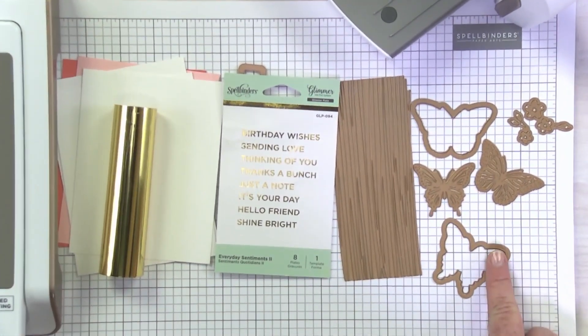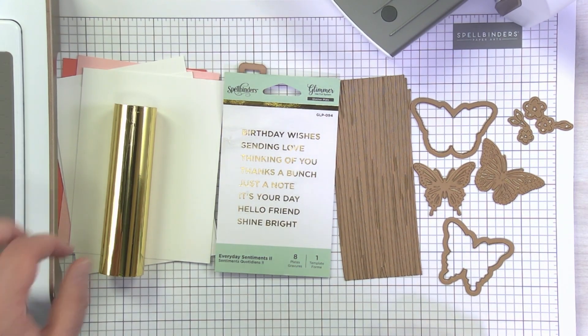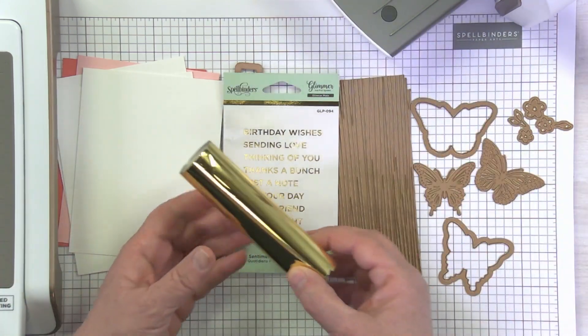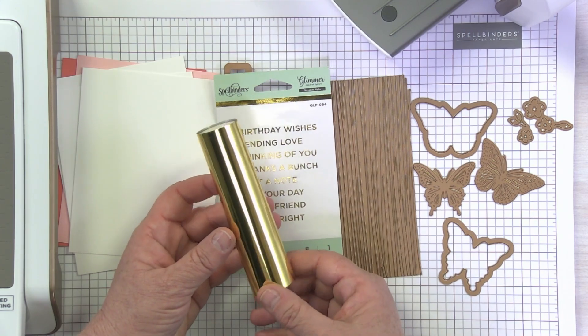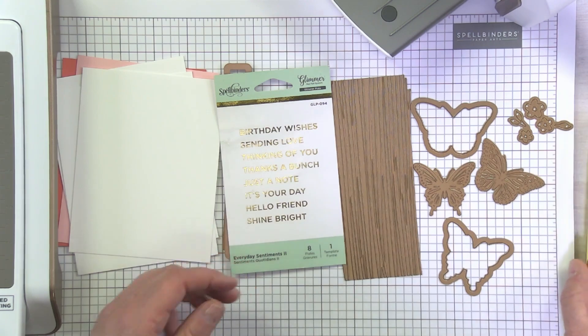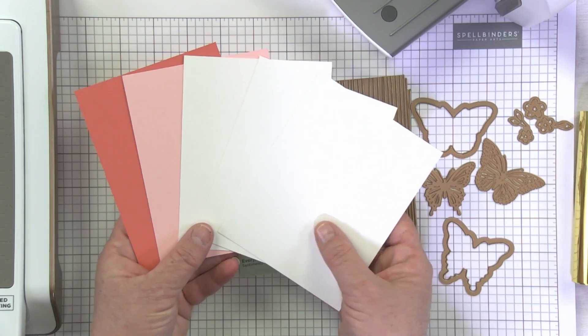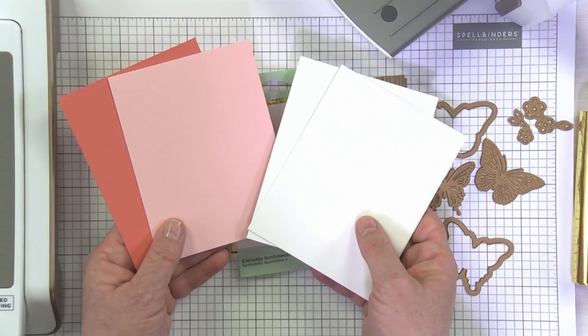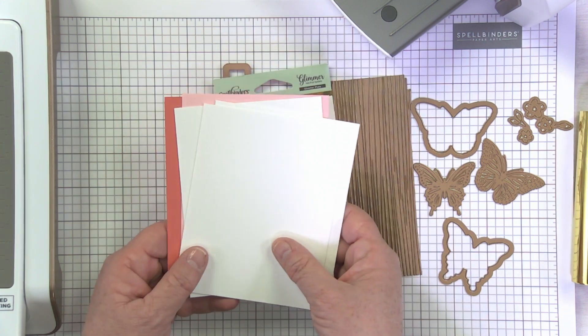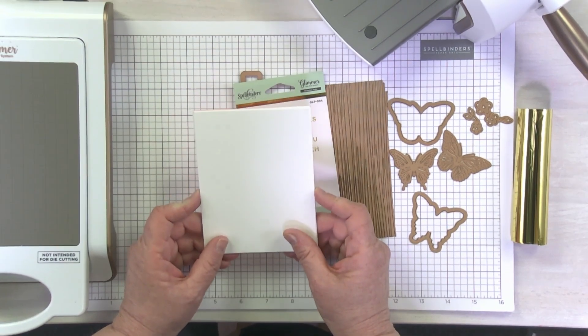These also happen to have a matching die, which you don't have to have, but I thought it would work out nice for this project. In addition to our basic equipment, which we went through in an earlier video, I've chosen to use our gold foil. This is our very basic, never fails gold foil. I also have some card stock cut into card panel sizes.